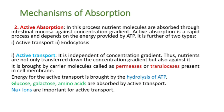In active transport, it is independent of concentration gradient. Thus nutrients are transferred not only down but also against the concentration gradient. It is brought about by carrier molecules called permeases or translocases present in the cell membrane. Energy for active transport is provided by hydrolysis of ATP. Glucose, galactose, and amino acids are absorbed by active transport. Sodium ions are also important for this type of transport.